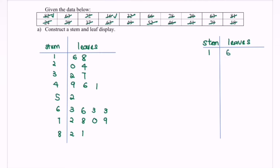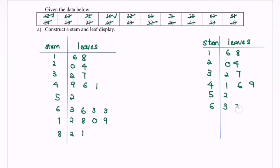For stem 1, we have leaves 6 and 8. For stem 2, leaves 0 and 4. For stem 3, leaves 2 and 7. For stem 4, rearrange the leaves in ascending order: 1, 6, 9. For stem 5, leaf 2. For stem 6, leaves 0, 3, 3, 3, 6. For stem 7, leaves 0, 2, 8, 9. For stem 8, leaves 1 and 2.